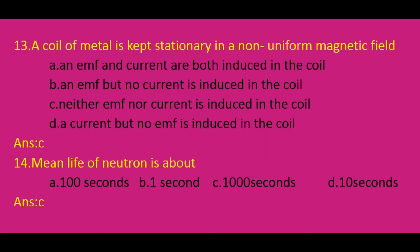A coil of metal is kept stationary in a non-uniform magnetic field. When a metal coil is placed in a non-uniform magnetic field but kept stationary, neither EMF nor current is induced in the coil. So the answer is C.